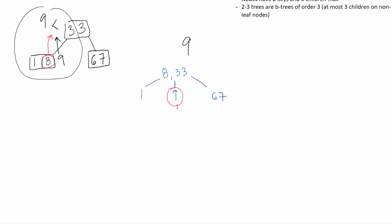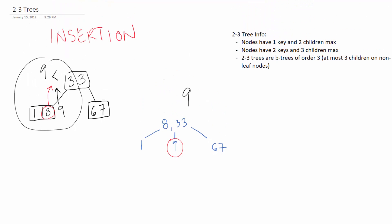Let's add 31. Where should 31 go? It's between 8 and 33, and it's bigger than 9. So it's still wedged in between the keys of our root node, but bigger than 9. We can actually stick it in here — add 31 as a second key in the middle node alongside 9. We still satisfy rule 2.